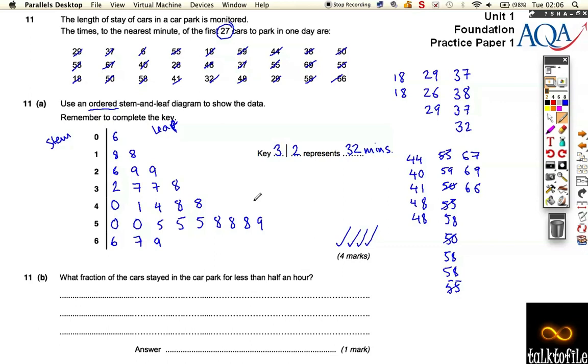minutes. That'll be my fourth mark. So a little bit long and fiddly, but not very difficult—just need to make sure you get it right in the exam. Now, what fraction of the cars stayed in the car park for less than half an hour? Let's look at my diagram. Less than half an hour means less than 30 minutes, so that's 29, 29, 26, 18, 18, and 6.